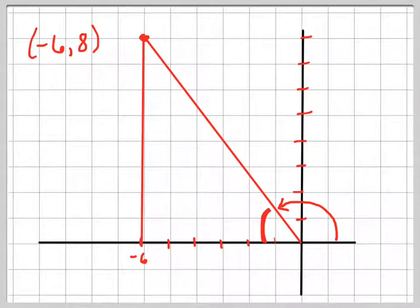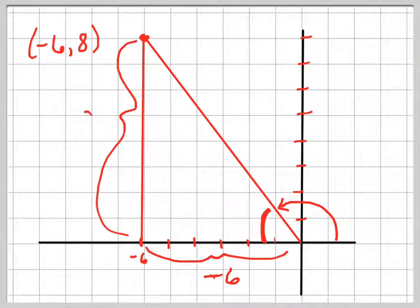So there's my triangle right there. This distance right here is negative 6, and this distance right here is positive 8. And so this is my angle theta, the reference angle.